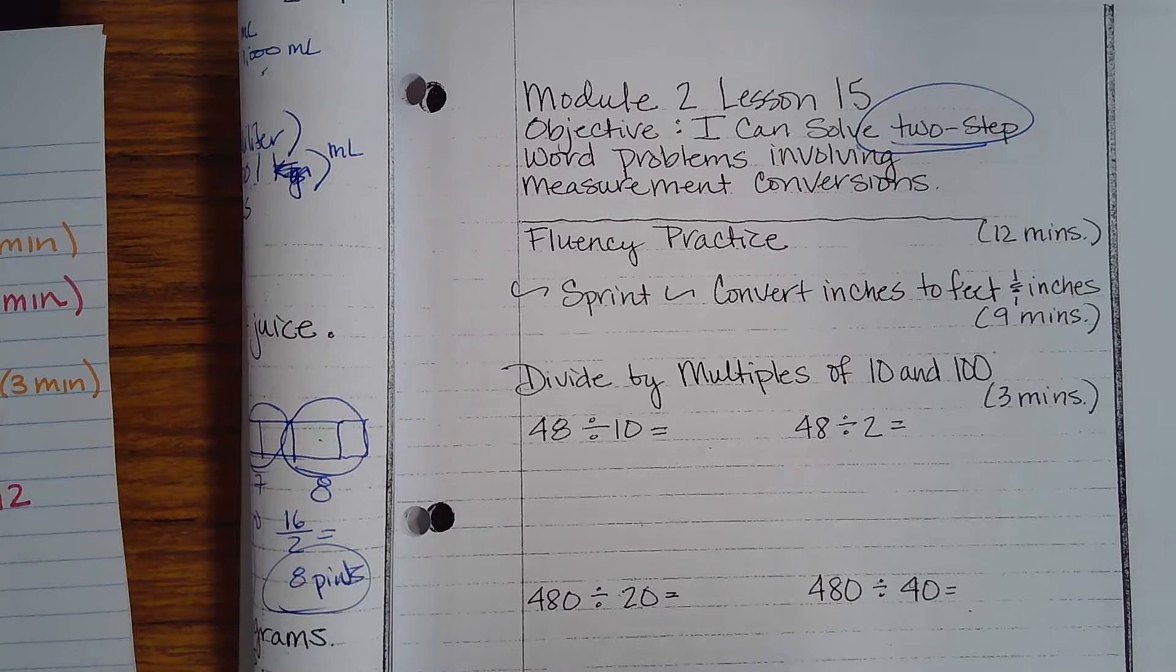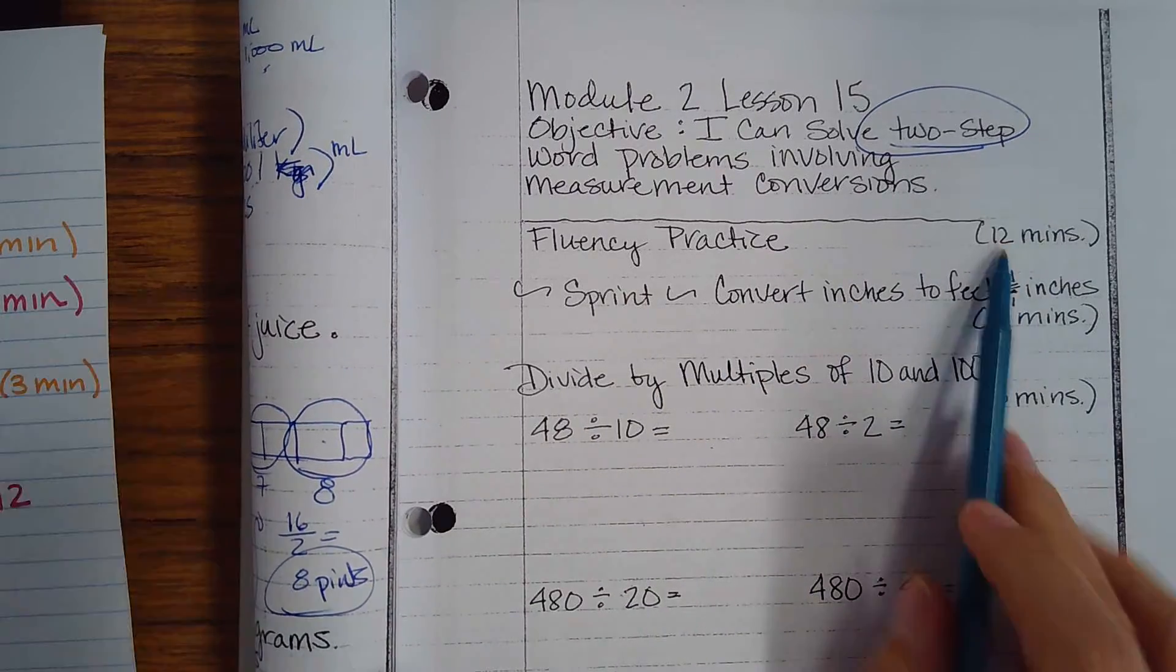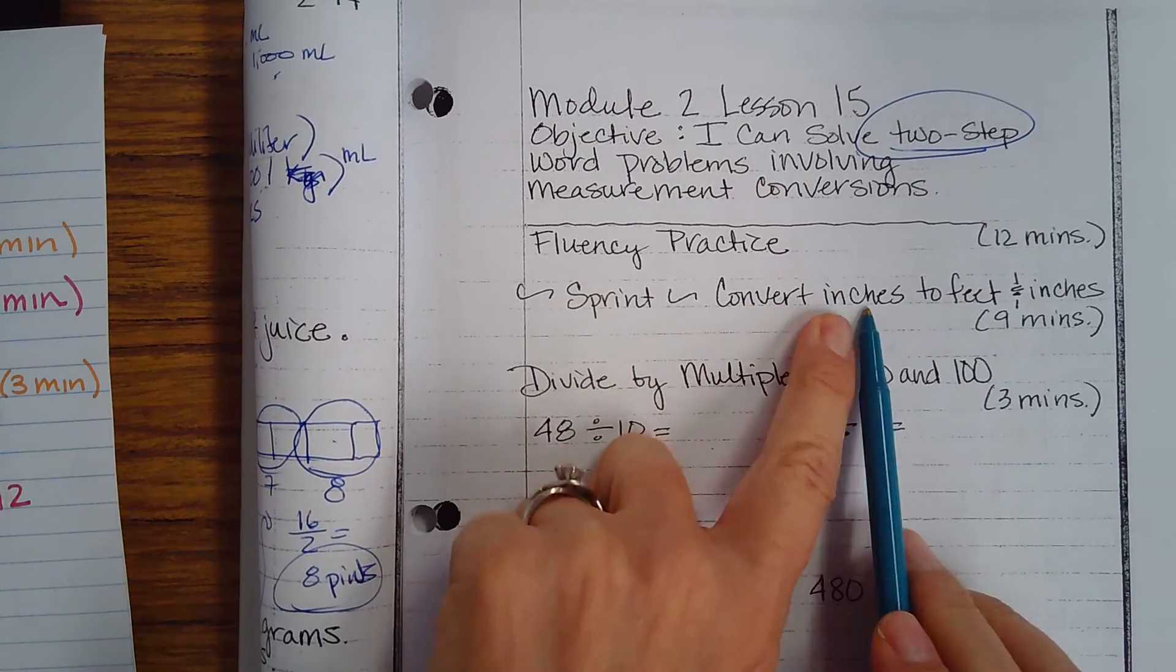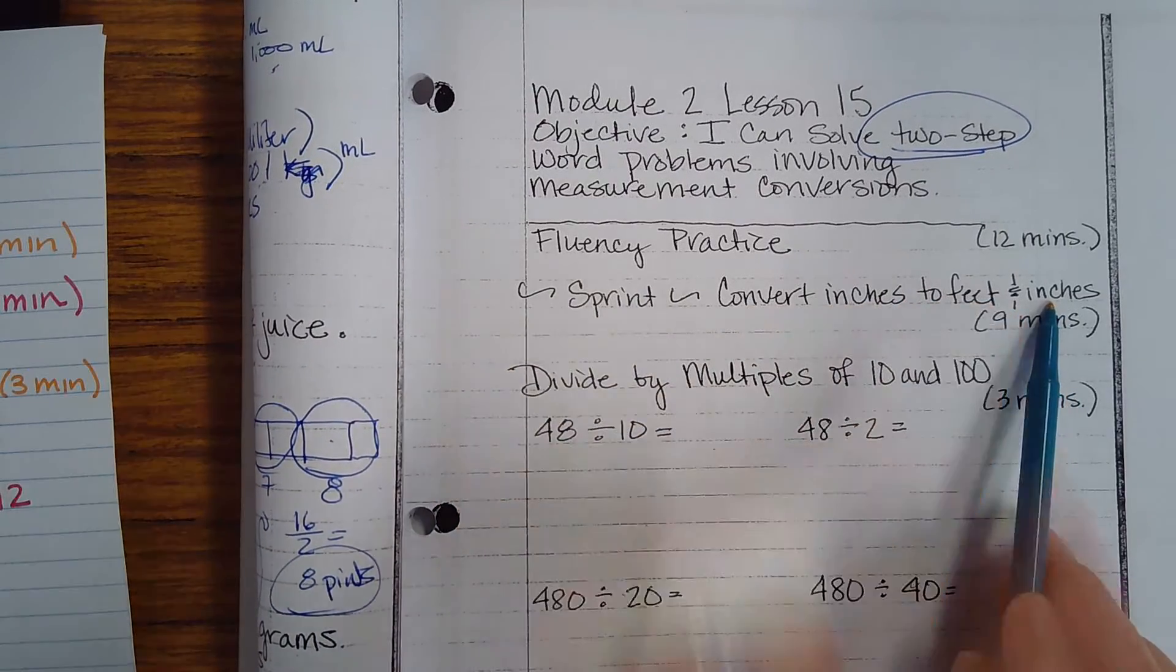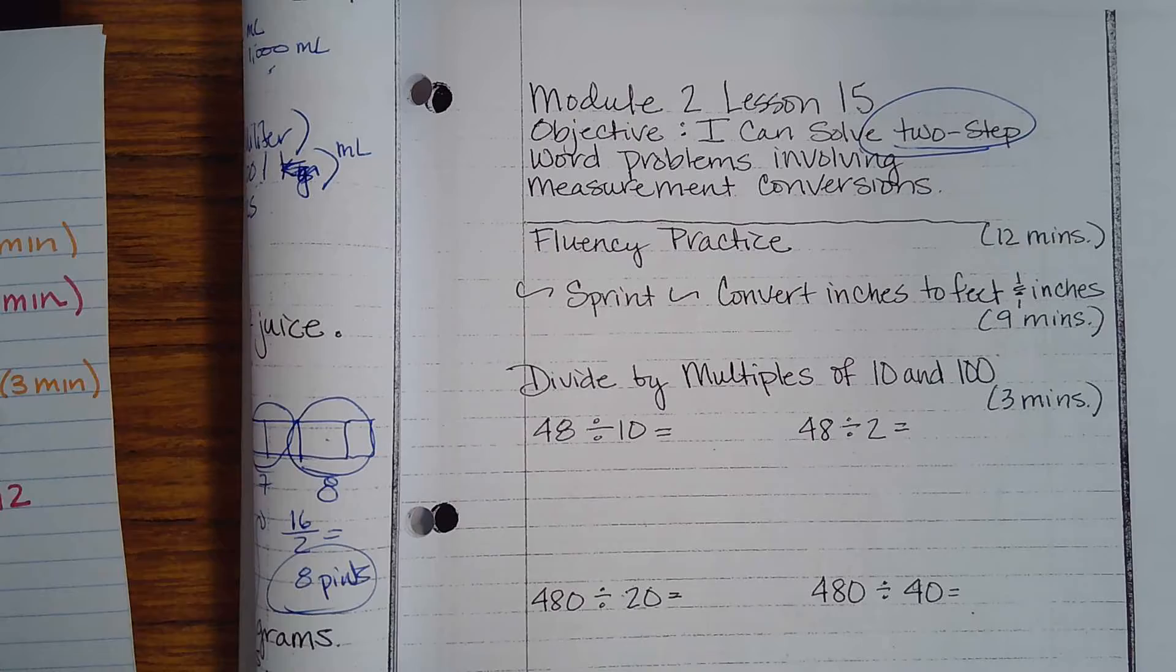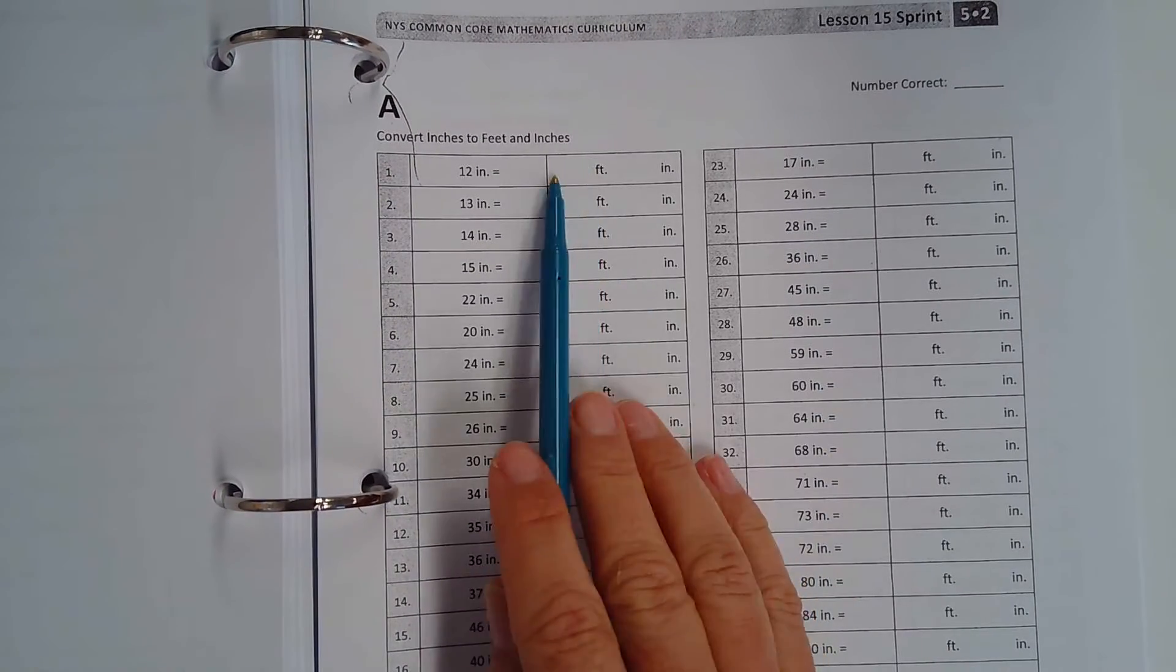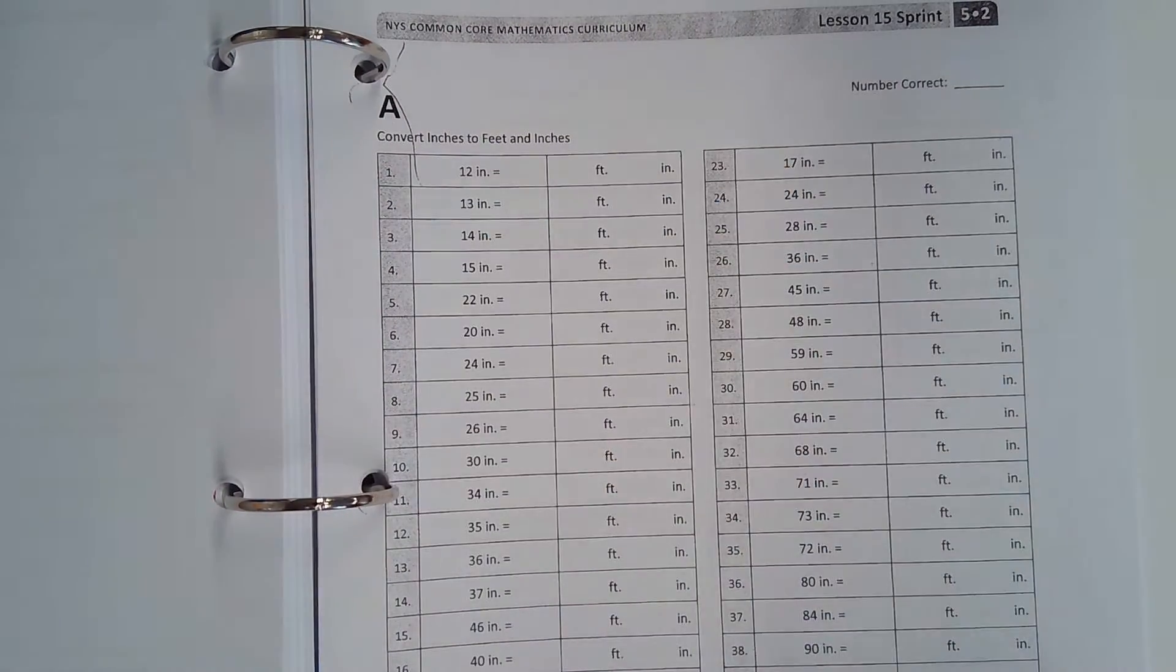All right, so let's go ahead. We're going to start with our fluency practice. Our fluency practice is a sprint. We're going to convert inches to feet and inches, kind of like what we did yesterday. So pull out your sprint and we're going to fill in just like we did yesterday.